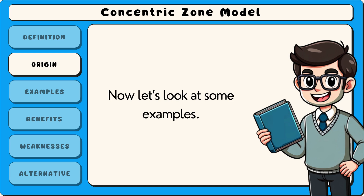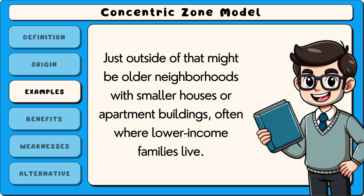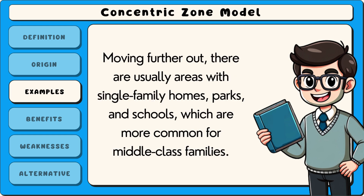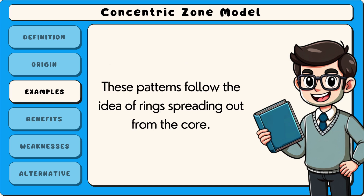In many large cities, the downtown area is full of offices, government buildings and stores. This is the central business district, or the inner ring. Just outside of that might be older neighbourhoods with smaller houses or apartment buildings, often where lower income families live. Moving further out, there are usually areas with single family homes, parks and schools, which are more common for middle class families. On the very edge of the city, you might find suburbs with newer houses and people who commute to the centre for work. These patterns follow the idea of rings spreading out from the core.